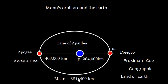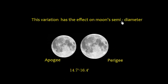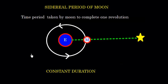The mean distance of the Moon from Earth is taken as 384,400 kilometers. This variation in distance has an effect on the Moon's semi-diameter: at apogee it is about 14.7 arcminutes, and at perigee it is about 16.4 arcminutes when observed from Earth.